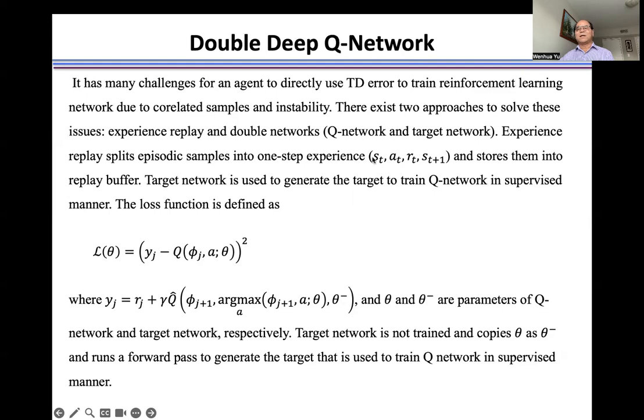When we train the model, we randomly pick the samples from the replay buffer. In this way, we can break the correlation between the samples in a sequence. Second is the double Q-Network.